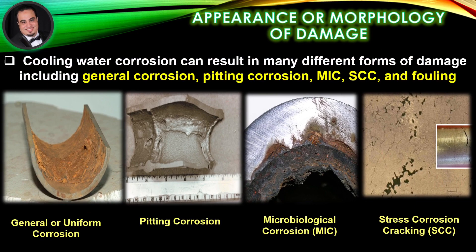Appearance or morphology of damage: As illustrated in the figures, cooling water corrosion can result in many different forms of damage, including general corrosion and pitting corrosion.